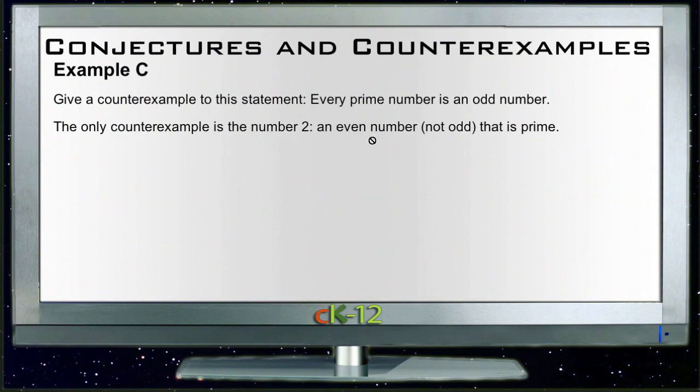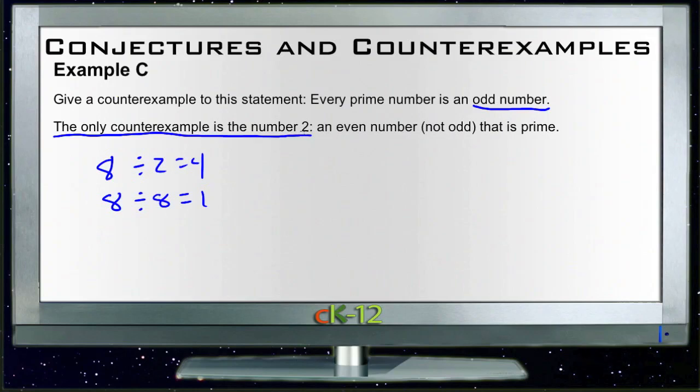And then finally, for example C, give a counterexample to the statement: every prime number is an odd number. Well, generally speaking, that's true because if it's not an odd number, then it divides by 2. So if it divides by 2 and whatever the number is, say for instance 8, 8 divides by 2 to be 4. So it can't be prime because it should only be divisible by 8 and 1 if it's prime. But there is a counterexample, and that's the only even number that only divides by 2, which would be itself, 2. 2 divides by an even number 2, but 2 is itself, so that's the only example of a prime number that's also an even number.